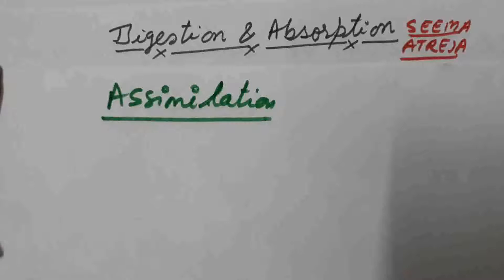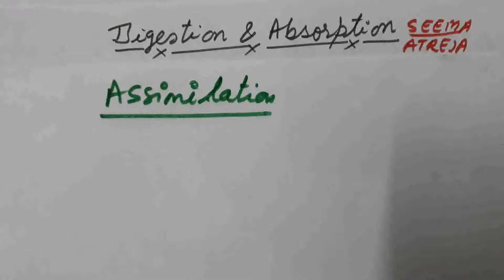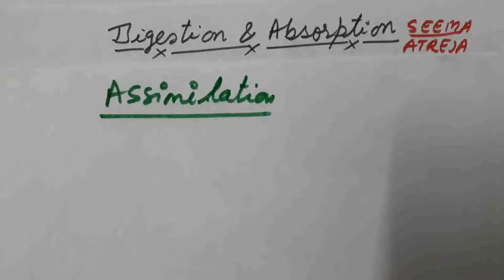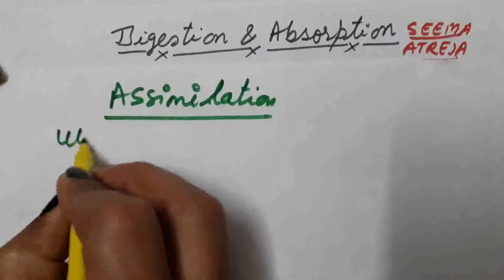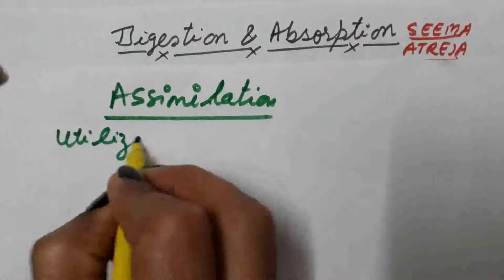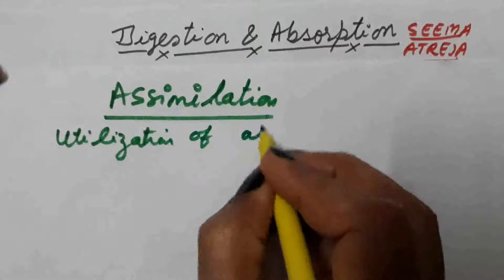Hi everyone, this is your biology class. I am your teacher Sima Adreja. In the previous lecture, we studied how digested nutrients are absorbed in our body. In this lecture, we are going to discuss the next step of digestion and absorption, that is assimilation. Assimilation means utilization of absorbed food.